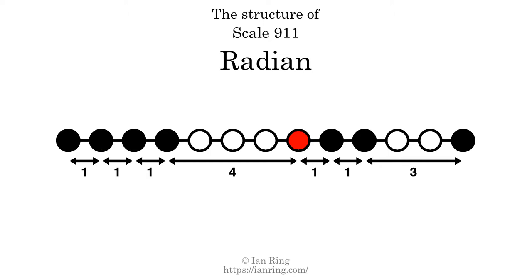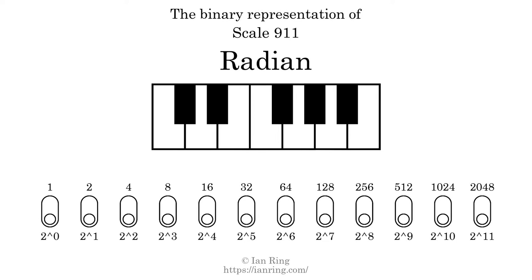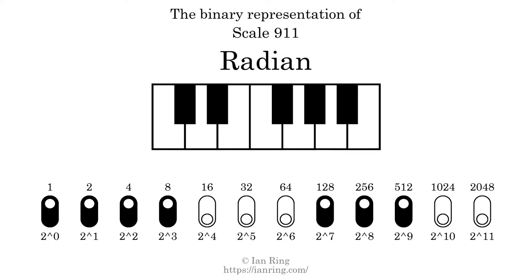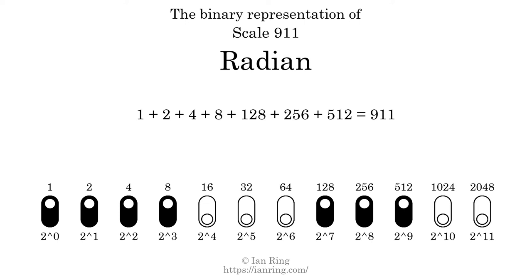The binary representation of this scale is determined by mapping tones of the scale to binary digits. Each binary digit represents a power of 2. To get the scale number, we add the powers of 2 together. The powers of 2 that are present in the scale, all added together, equals 911.